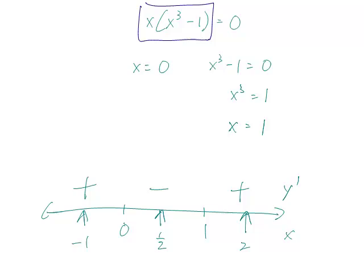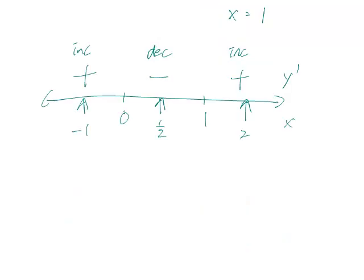So we have increasing, decreasing, and increasing. Increasing followed by decreasing means a relative maximum, and decreasing followed by increasing means a relative minimum. This gives us the first half of what we need.